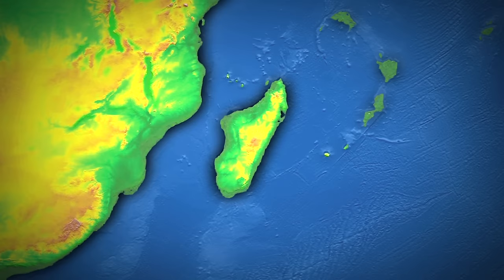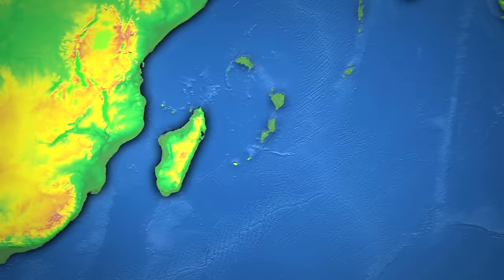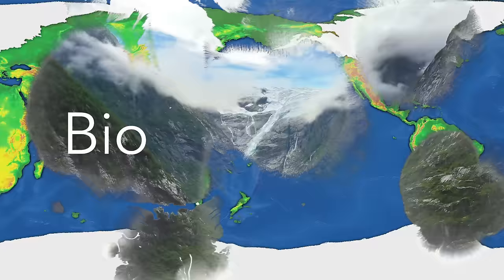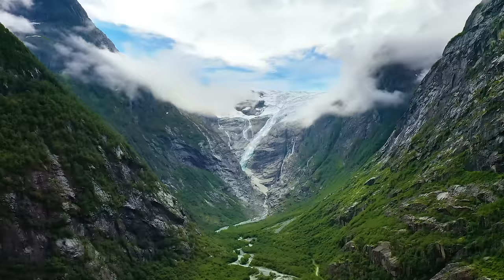Beyond all of the glaciers, lakes, islands, and continental shelves, the surface of the Earth was changed in one last considerable way — in terms of its natural environment, or in other words, its biogeography. This, however, could fill a video of its own. So if you'd like to see how nature reacted to all of these shifting conditions, let me know in the comments.